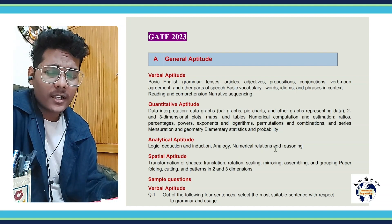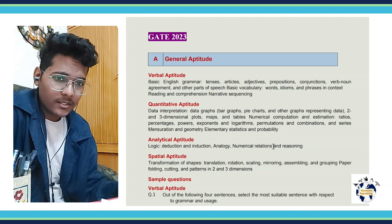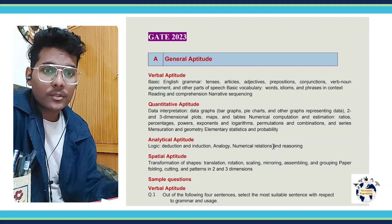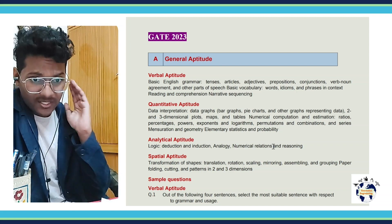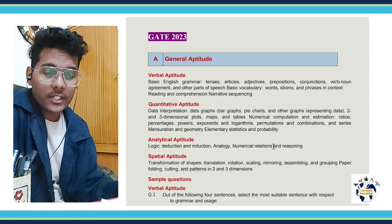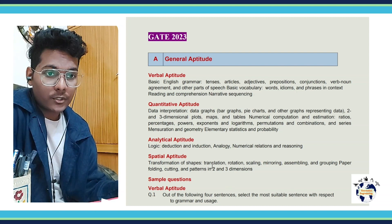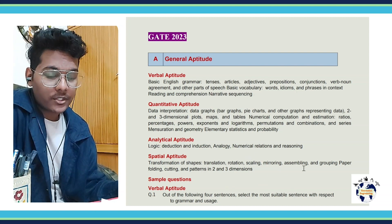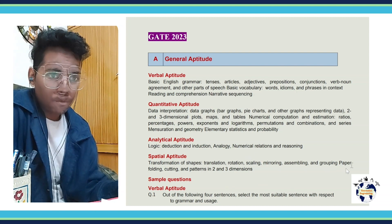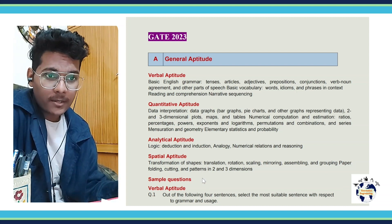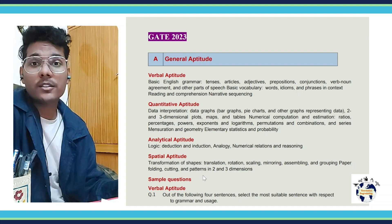The fourth section is a relatively newer topic under general aptitude in GATE — it is special aptitude. It covers transformation of shapes, which includes translation, rotation, scaling, mirroring, assembling, and grouping. Then you have paper cutting, folding, and patterns in two and three dimensions.